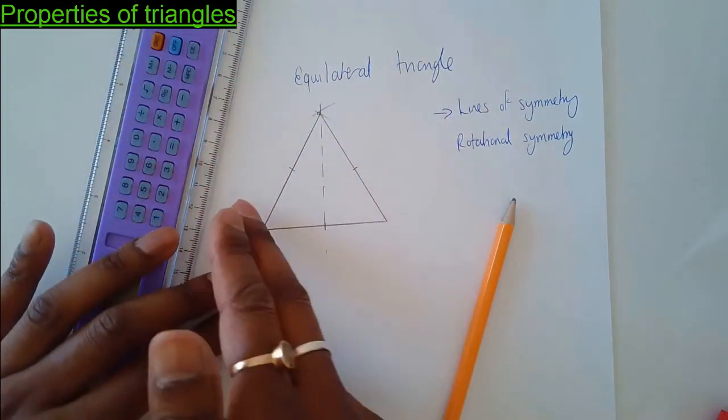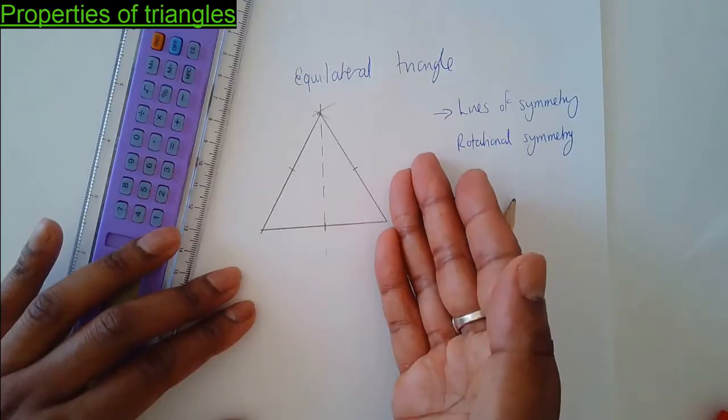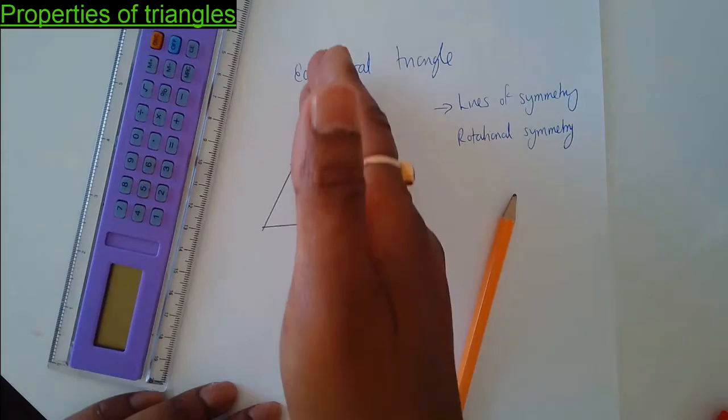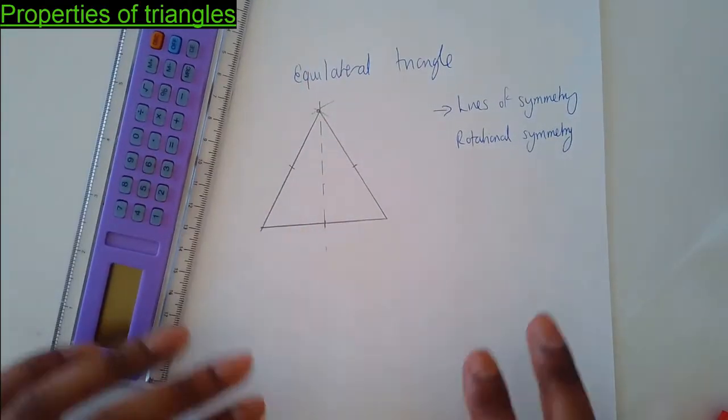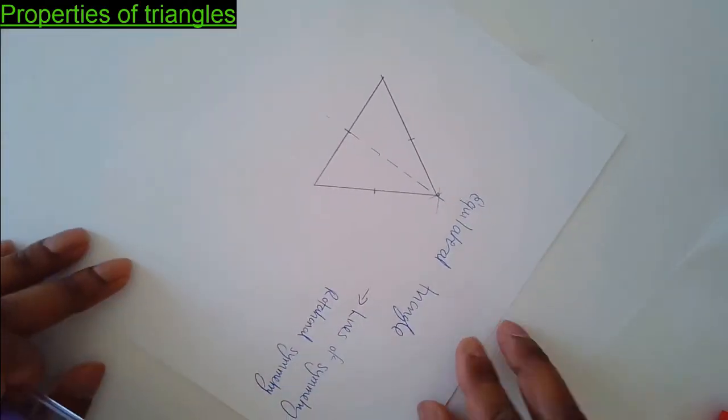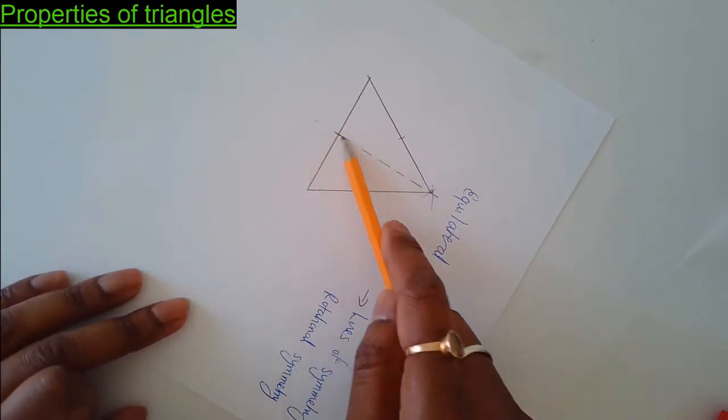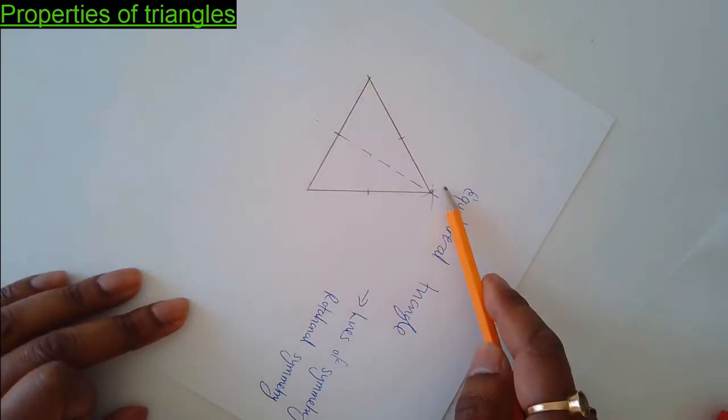Everything on this side of the mirror line matches everything on the other side of the mirror line. It's a line of symmetry, that's one. I just ignore that now, just look at this triangle here.